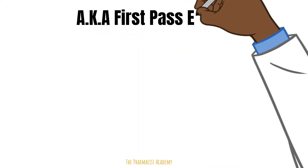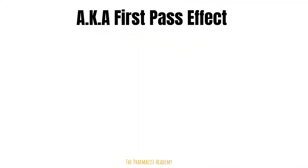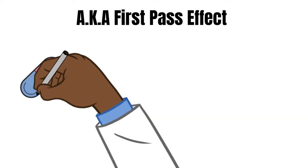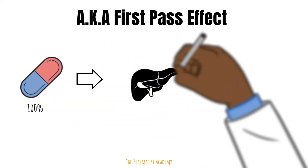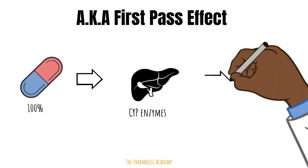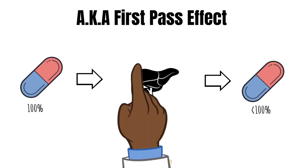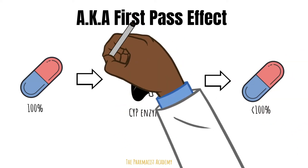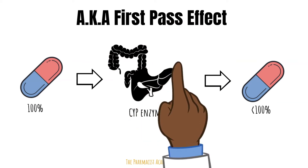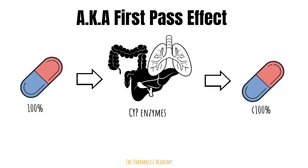It's also known as the first pass effect. The first pass effect simply means a drug gets metabolized as it passes through the body before it reaches the site of action. This usually occurs in the liver, but keep in mind that there are also other organs that play a huge role — your GI tract and also your lungs.